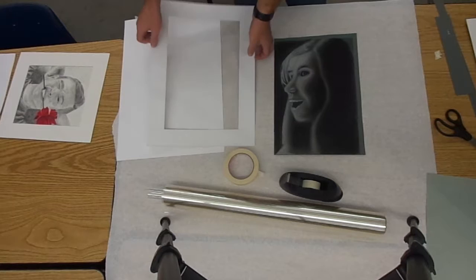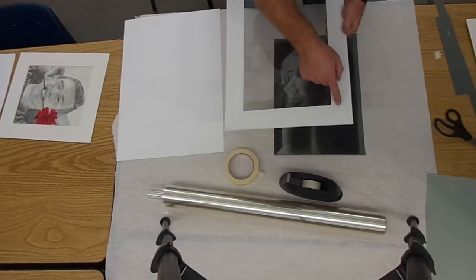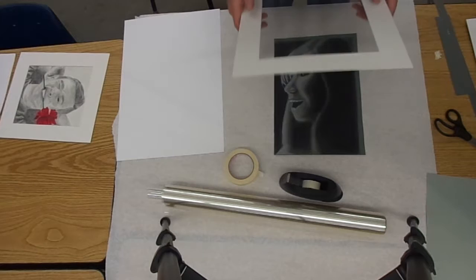I have my two pieces of tape that are with the sticky part up. I'm going to tape this. Again, make sure that when you tape this, you had the pencil markings. You did this on the back and not on the front. We don't want to tape on the front.